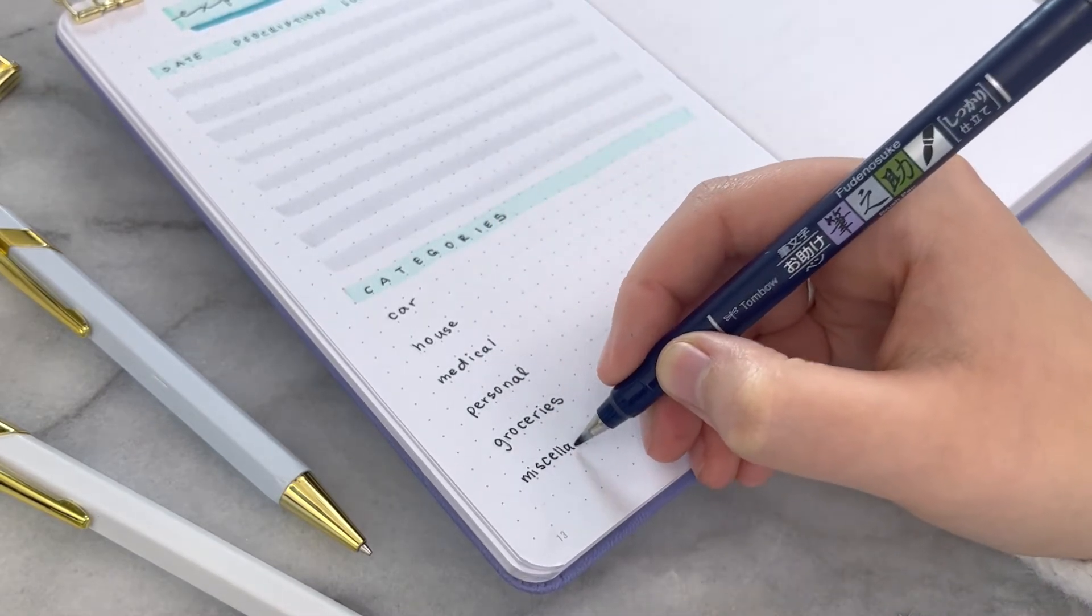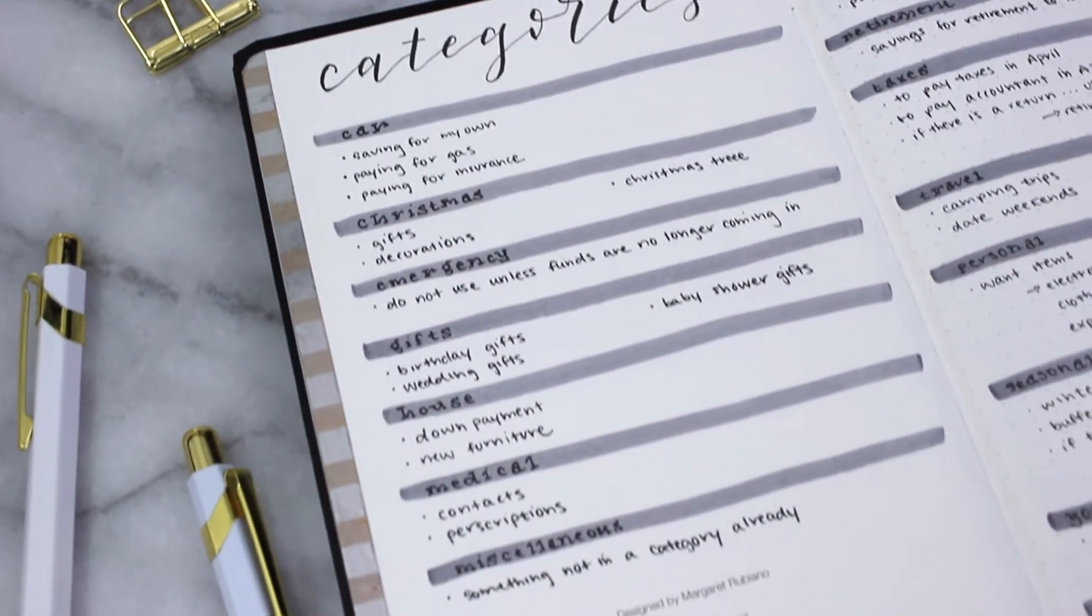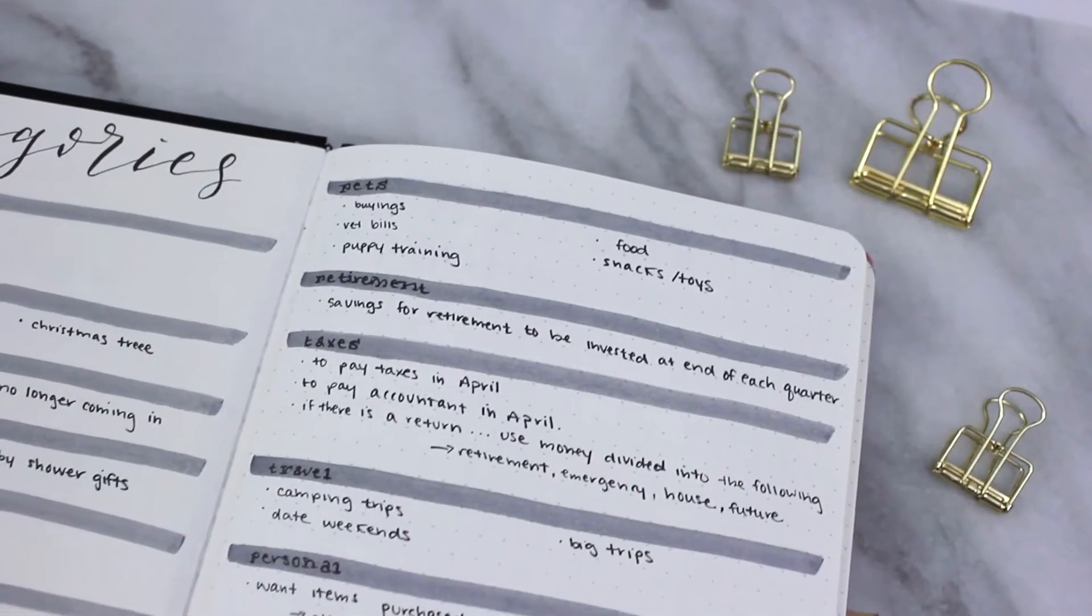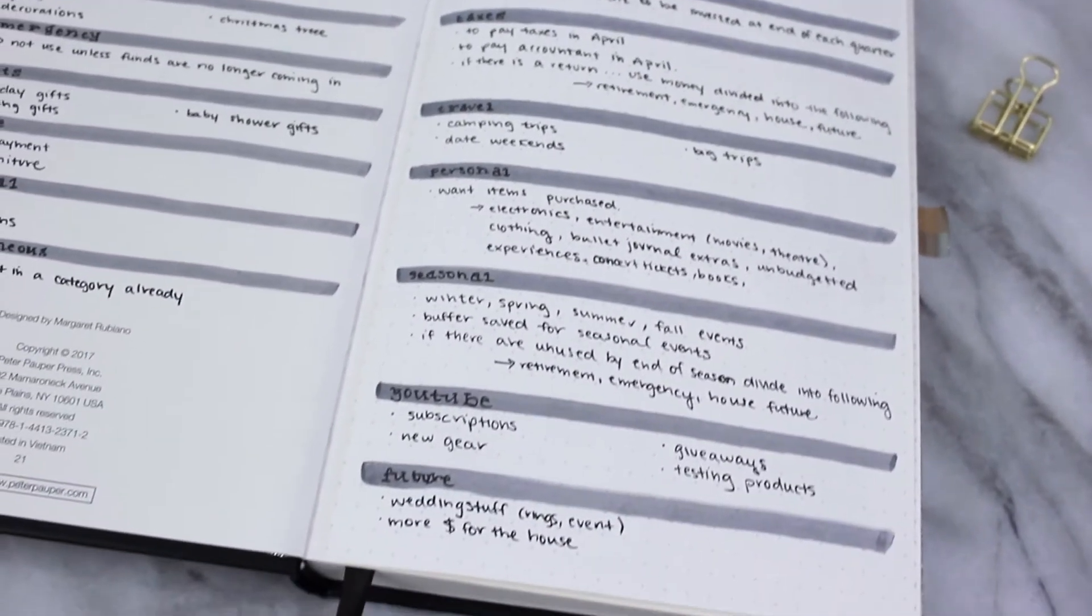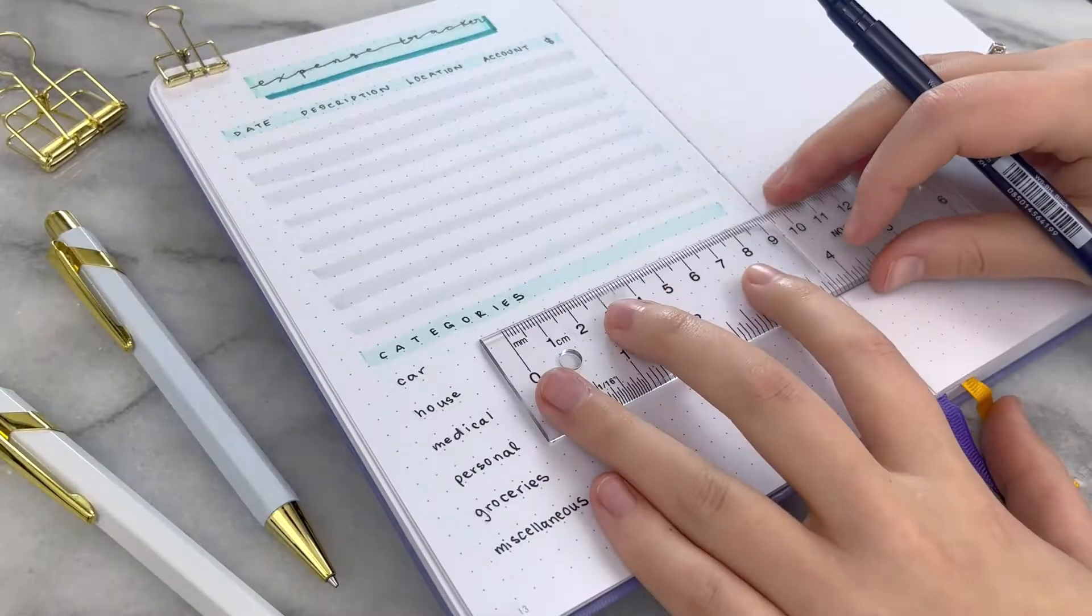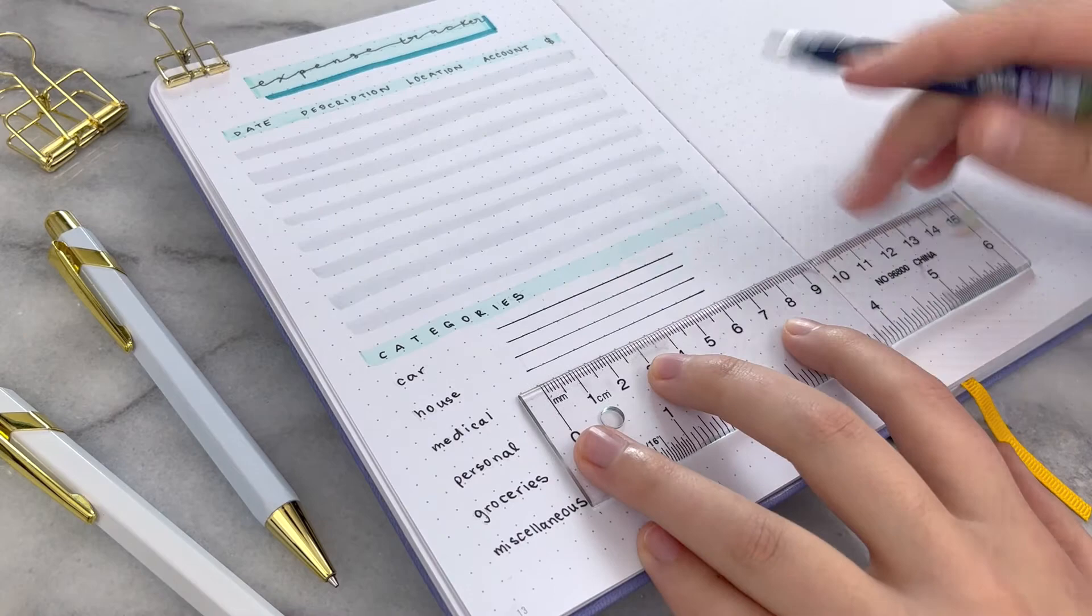Here is the exact spread from my financial bullet journal that I use to break down my categories and show exactly where my money is going. So there's no confusion on what expense goes where. I'd recommend having something like that in your financial care journal as well.